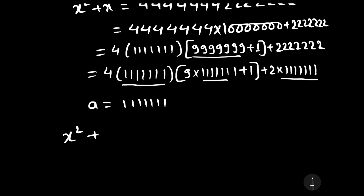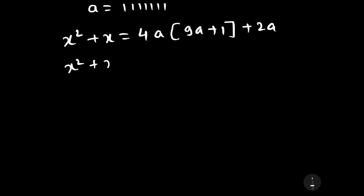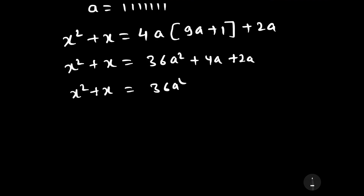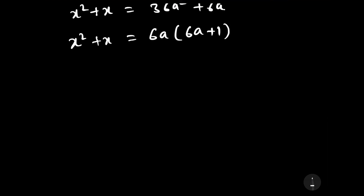Substituting a for 7 to the power 1, the equation becomes x squared plus x equals 4 times a, times 9a plus 1, plus 2 times a. Expanding, we get x squared plus x equals 36a squared plus 4a plus 2a, which simplifies to 36a squared plus 6a, or 6a times 6a plus 1. Rearranging: x squared plus x minus 6a times (6a plus 1) equals 0.